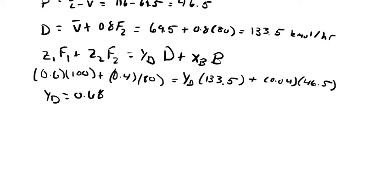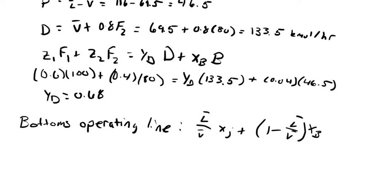To find our optimum number of feed stages we will need a bottoms operating line. Plugging in all these values you'll get an operating line that is equal to 1.76x minus 0.027.